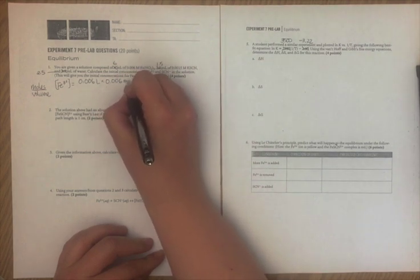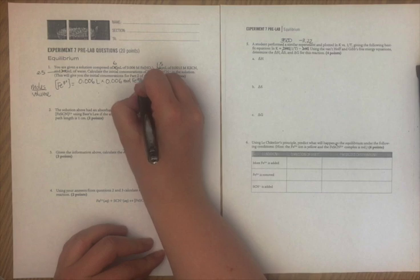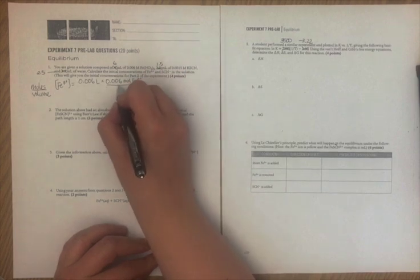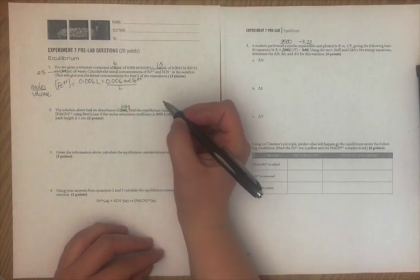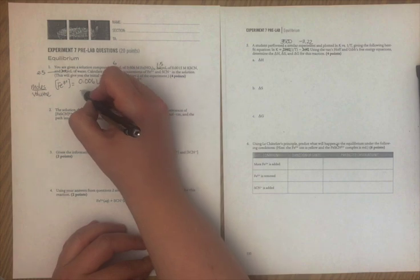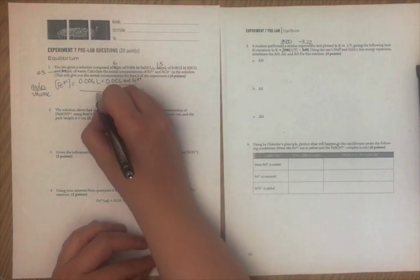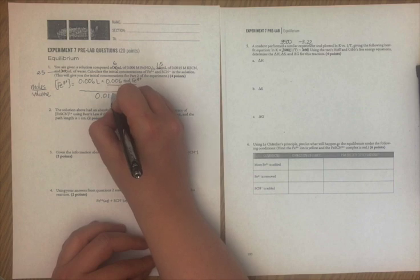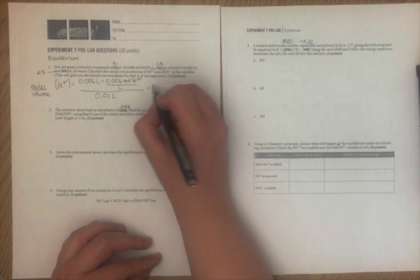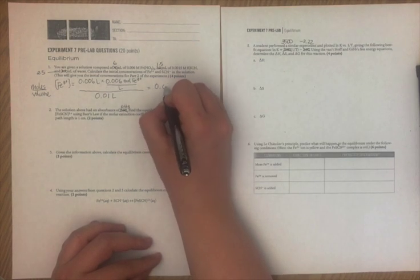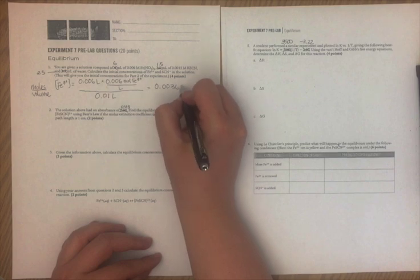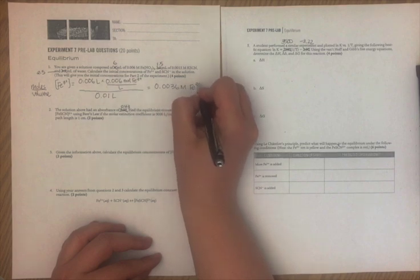And that's also our concentration, 0.006 moles Fe³⁺ per 1 liter of solution. That gives me the moles of iron. And now, to find the concentration, I divide by the total volume. In this case, it's 10 milliliters. I end up with 0.0036 molar Fe³⁺.